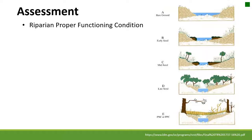One example of an assessment is the Riparian Proper Functioning Condition, or PFC. This is a qualitative assessment that's based on quantitative science. It's qualitative because you're essentially putting a stream in a designated area into a category — as you can see in the picture on screen. You walk up and down a stream and at designated locations you look at the hydrology, the vegetation, and the erosion, and fit it into one of those categories.